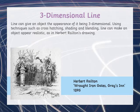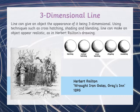We can also use line to make three-dimensional objects — give an object the appearance of being 3D, even though it's on a flat piece of paper. We can use techniques such as cross hatching, shading and blending, and line can make an object appear realistic. Look at these spheres here — they're just circles, but by adding in hatching, contour hatching, cross hatching, stippling or scumbling — that's quite a funny word, can you say that? Scumbling — we've created some three-dimensional spheres from those circles. It's almost like magic with a pencil.